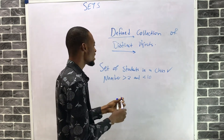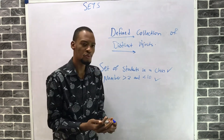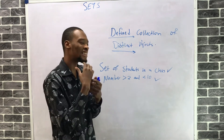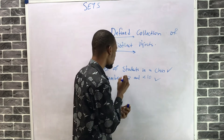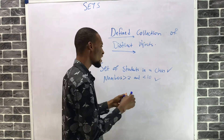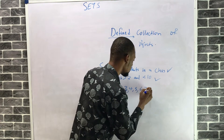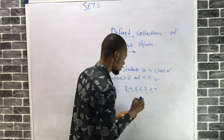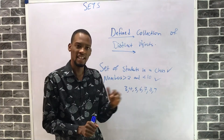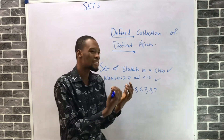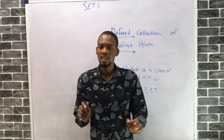This is defined in the sense that if anywhere you go — whether you go to Europe, London, America, or Nigeria — numbers greater than two and less than ten are three, four, five, six, seven, eight, nine. There is no argument about this. Similarly, the 36 states in Nigeria is defined, so you can't argue that a particular state is not a state in Nigeria.